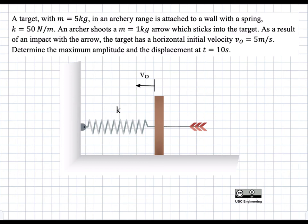In this problem, a mass is attached to a spring, and this mass has an initial velocity. We're asked to find what is the max amplitude and what is the actual amplitude at time equals 10 seconds.